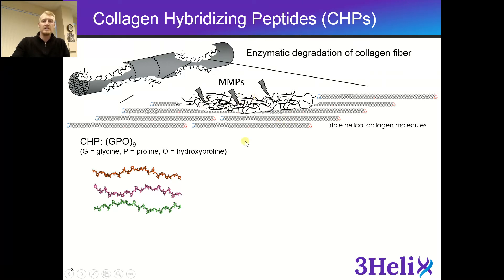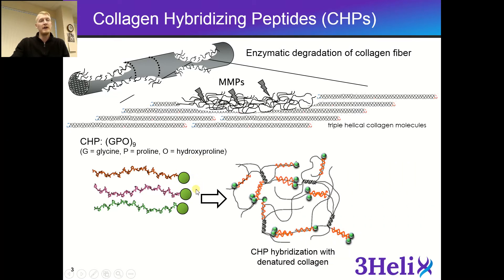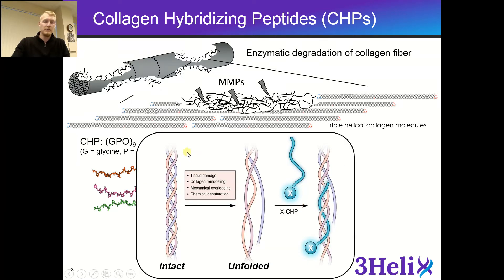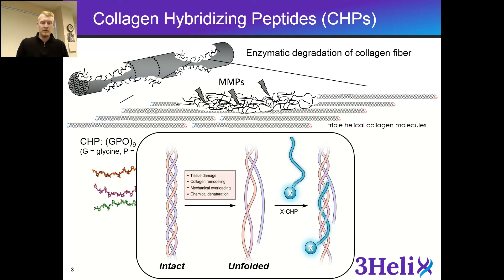Our CHPs can actually go in and reform the collagen triple helix with these strands. We attached fluorescent molecules and biotin onto our CHPs, and when we apply them to tissue sections, they refold and hybridize into a triple helix with the individual collagen strands — so we have a smaller peptide sequence with a fluorescent probe that refolds into the triple helix, and you can read this fluorescence for staining. You can think of this similarly to DNA primers binding to the DNA sequence during PCR, where the much smaller primers go in and hybridize with the much longer DNA strands.